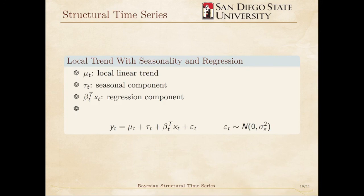Here, we consider MuT to be a local linear trend as before, and TauT is our seasonal component. The regression component is beta transpose X. The model looks like this. We write in this way for simplicity. Since MuT is a linear trend model, there are two more equations associated with it that we saw earlier. Likewise for TauT.